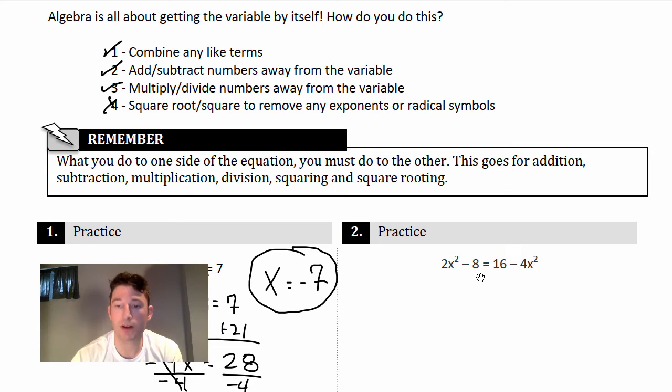Can we combine any like terms right now? No. But what we're going to do is get all the x's on one side and all the numbers on the other. So let's do this. I like keeping things positive, so let's add 4x². Do the opposite sign, right? Add 4x².